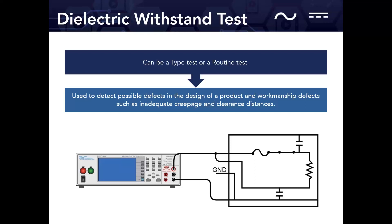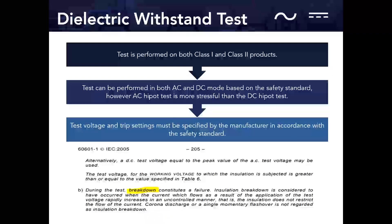The hypot test is used to detect possible design defects and workmanship defects such as inadequate creepage or clearance distances. In manufacturing, conductive metal shavings or scraps can be burned off by the hypot test. If a product fails its first hypot, it's good practice to run it again to see if those impurities are gone — and you may then get the pass you're looking for. This test is performed on both class one and class two products.